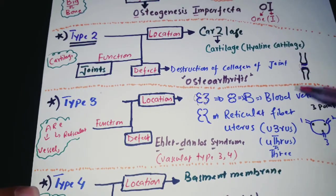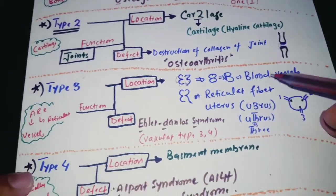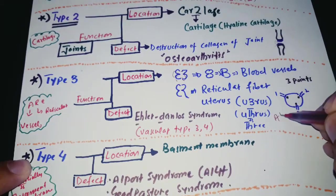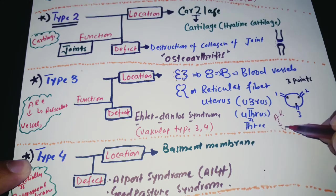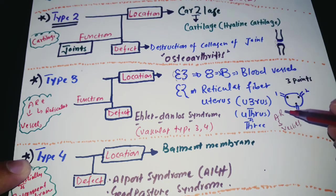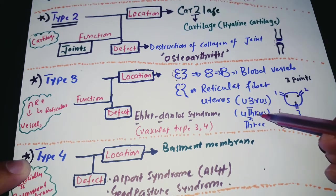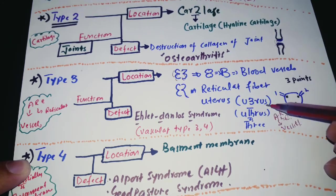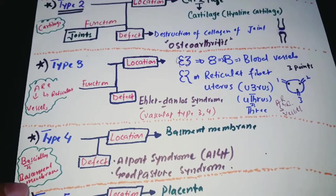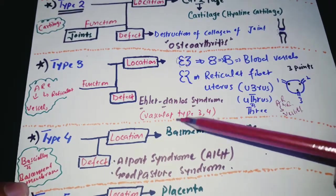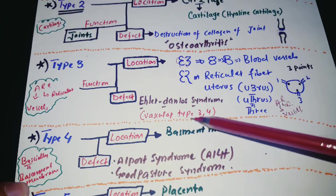For Type 3, if you write the number three, it resembles blood vessels. From the 'A-R-E' — inverting the A gives you vessel — so Type 3 is in blood vessels. The R stands for reticulin, and the uterus with fetal tissue is also a location for Type 3 collagen.